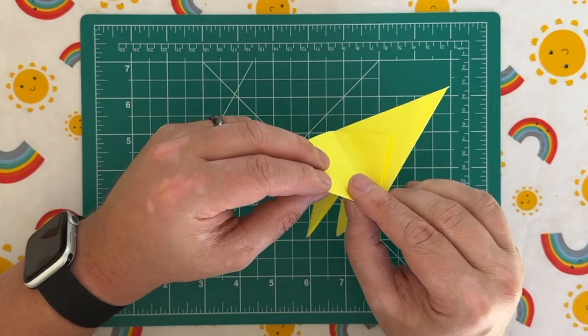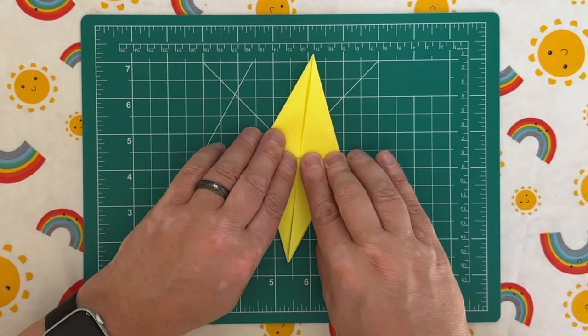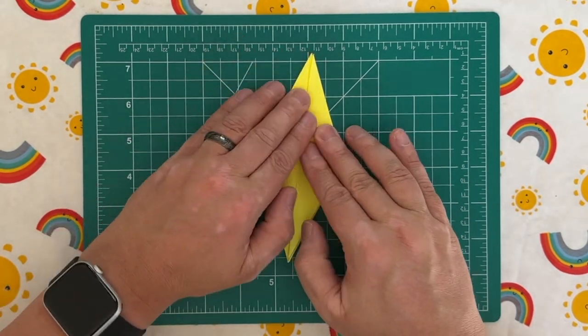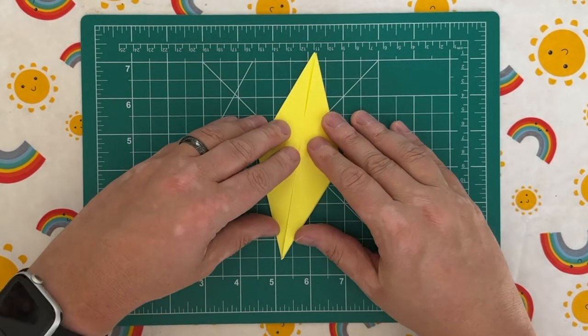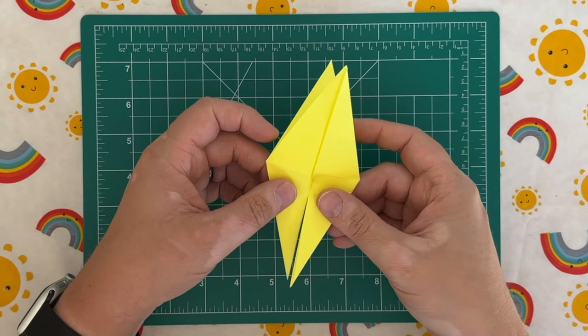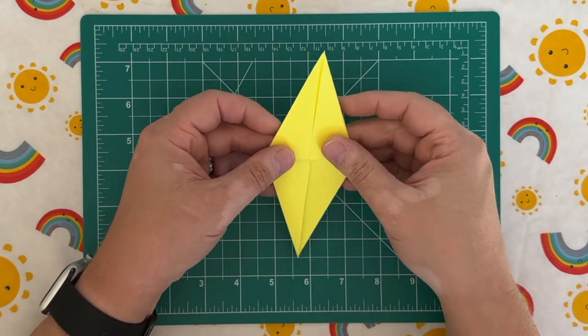So open up the fold, fold it back on itself. As you can see, we've got the bottom part in position, so I'm going to just push those down just to help hold it in place for me.